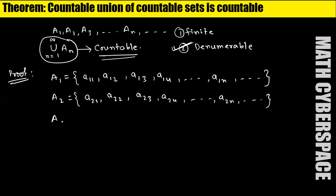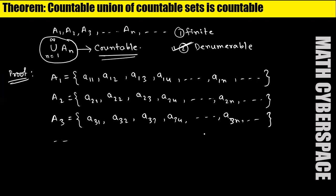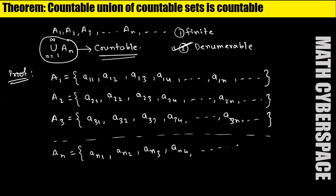For A3, you can write it as {a31, a32, a33, a34, a3n, ...}. In this way, we can write the elements of An as {an1, an2, an3, an4, ann, ...}.